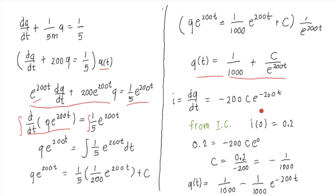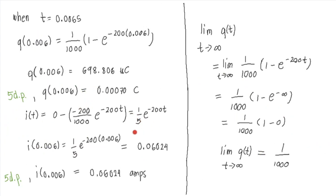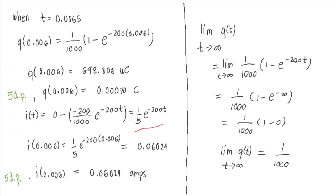Since we have Q of T, let's also find I of T by substituting our value of C. After substituting, I of T equals 0.2·e^(−200T). Since we're tasked to find the current at T equals 0.006 seconds, we substitute into I of T, and find the current through the RC circuit at that time rounded to 5 decimal places.